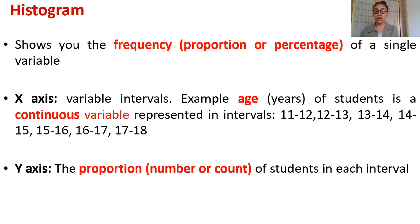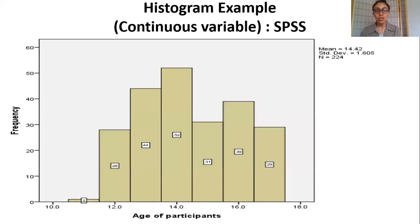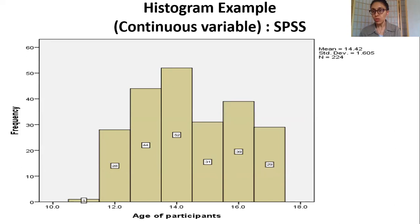The first and most common graph used in health science is the histogram. Histograms generally report the proportion or percentage. The x-axis consists of a continuous variable or a categorical one. The y-axis generally represents proportion in terms of percentage, number, or count. Looking at this example, the frequency is reported along with the age of participants. It also gives summary statistics: the mean and standard deviation. The sample size is 224, the mean age is 14.42 years, and the standard deviation is 1.605.